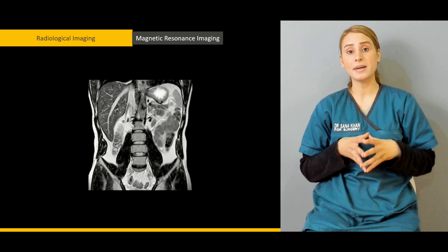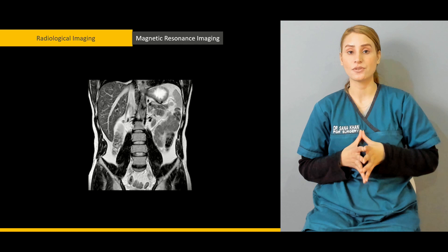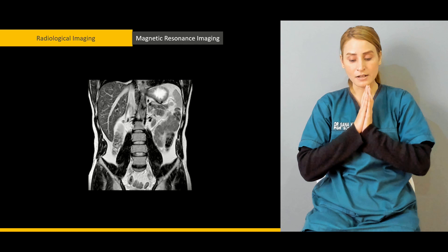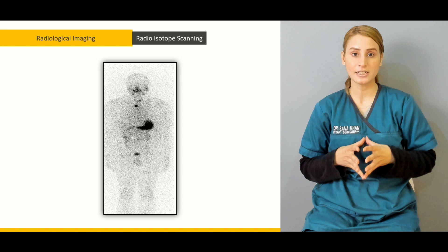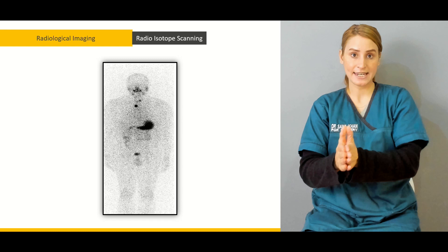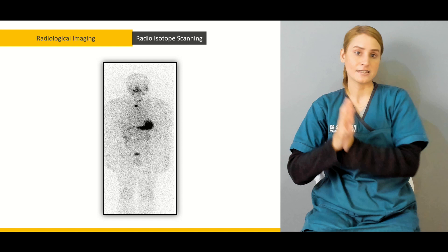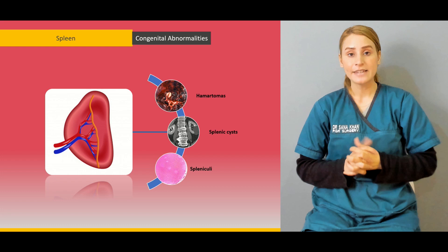Then we'll be talking about the role of magnetic resonance imaging, because MRI is more sensitive to soft tissue. In cases of aneurysms and splenic lesions, how MRI is going to help you in the diagnosis. Then we'll be talking about the role of radioisotope scanning — which radioisotope is used for splenic imaging, and especially how radioisotope scanning is going to help you differentiate if hemolysis is because of the spleen or if RBC destruction is taking place somewhere else.